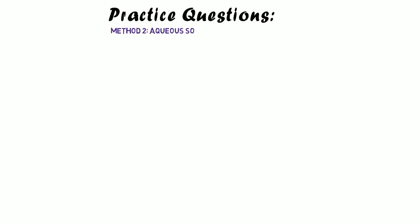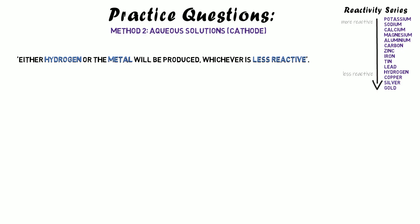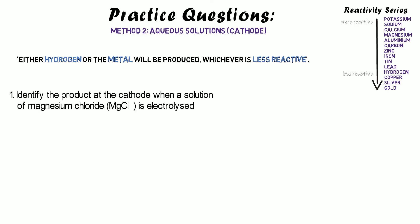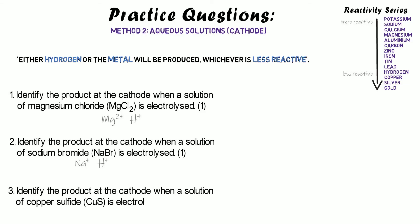Here are some practice questions for what is produced at the cathode. Remember: either hydrogen or the metal will be produced, whichever is less reactive — we're only thinking about those positive ions. Use your reactivity series. First, identify the product at the cathode when aqueous magnesium chloride is electrolyzed — the positive ions are magnesium and hydrogen. Then try sodium bromide — the positive ions are sodium and hydrogen. Finally copper sulfate — the positive ions are copper and hydrogen. Pause and have a go.